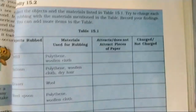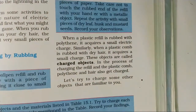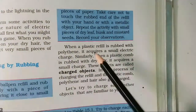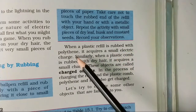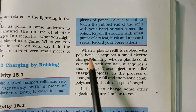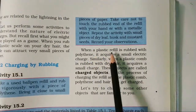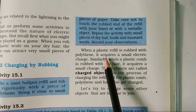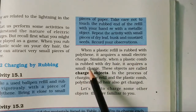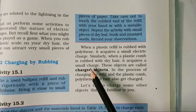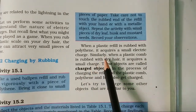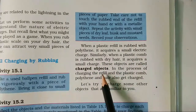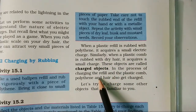How does an object get charged? There are some materials listed in this portion of the book. When a plastic refill is rubbed with polythene, it acquires a charge. How will you know that an object has a charge? It will start attracting light objects.